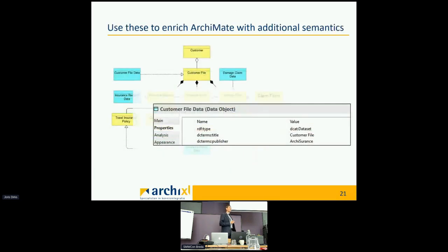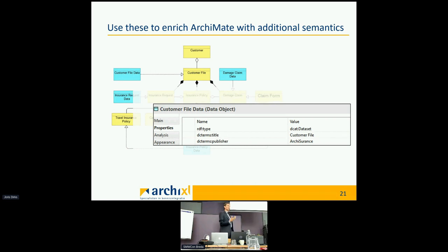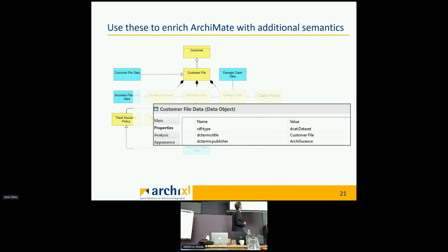If I model my architecture in Archie, I can add properties to elements. For example, a business object named Customer File — a record of a customer — can have a property named rdf:type with value dcat:Dataset, meaning it's a dataset as defined in the DCAT standard. I can also add a dc:title property from the DC Terms vocabulary with value 'Customer File', and a dcterms:publisher property with value 'Heart Assurance'.